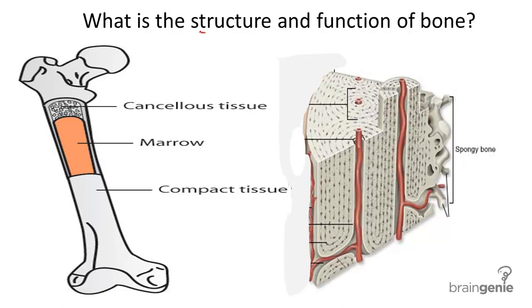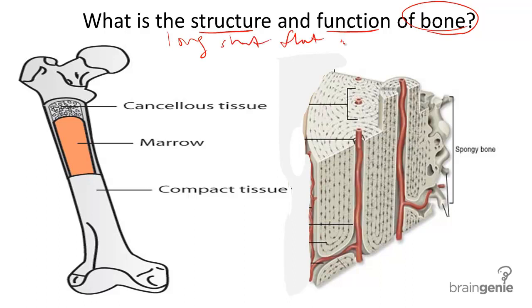What is the structure and function of bone? There are many different types of bone: there's long bone, there's short bone, there's flat bone, and there's irregular bone.